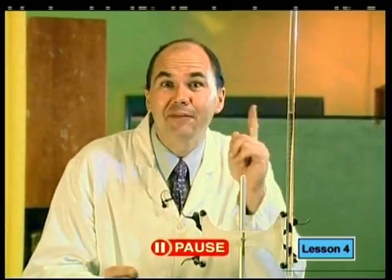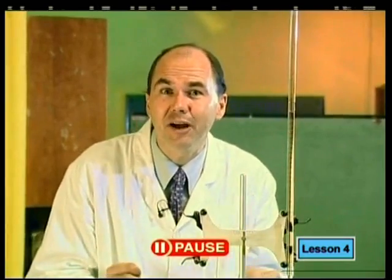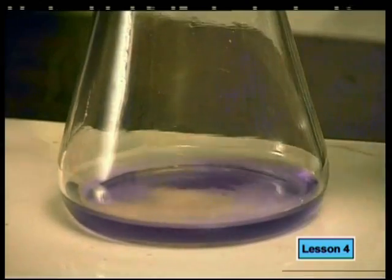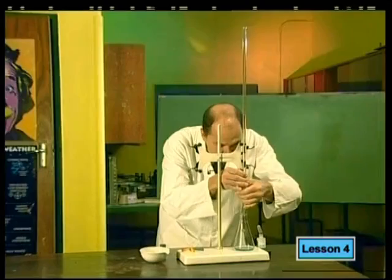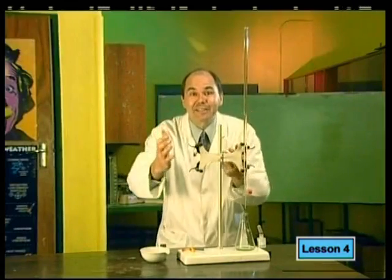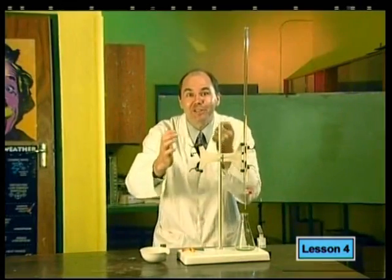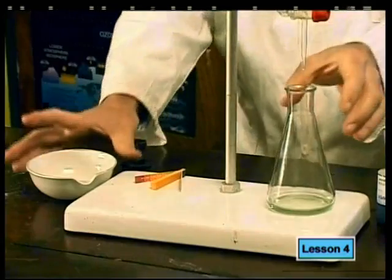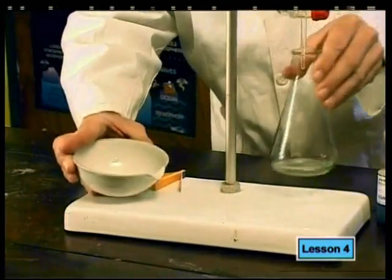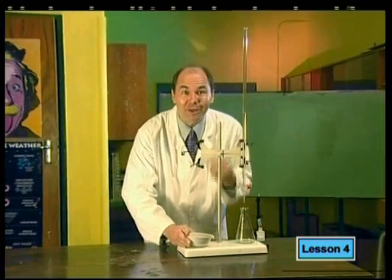I wonder what would happen if I added the acid to the flask. Think about it — let us see if your predictions are correct. Did you see the indicator changed color? That means the pH has changed too. I am going to take some of this solution and pour it into an evaporating dish. We will leave it for a while and come back to have a look at it a little later.